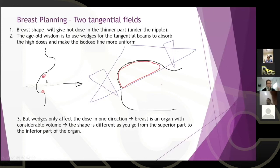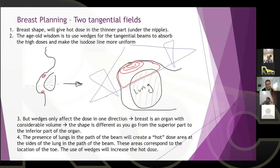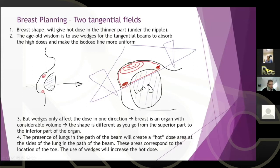Adding more complexity: underneath the breast is the lung. When you account for lung heterogeneity, the low-density lung tissue allows photons to travel through more easily, contributing to higher dose at the entrance and exit of the beam. So you have hot areas from the breast shape in both transverse and sagittal views, plus the added complexity of lung in the beam path. Wedges — which can only modulate in one direction — are clearly not sufficient here.